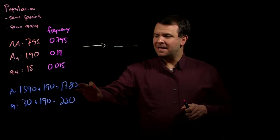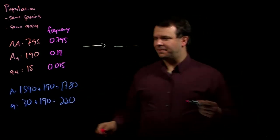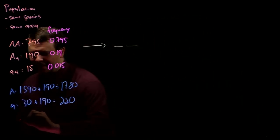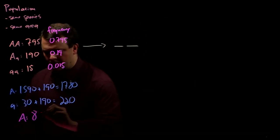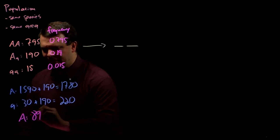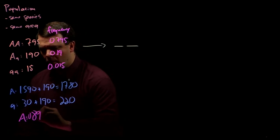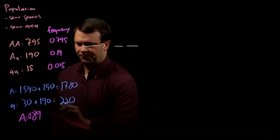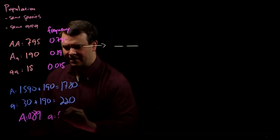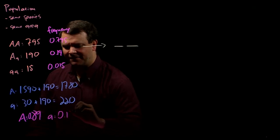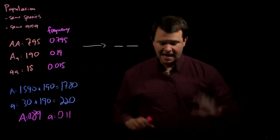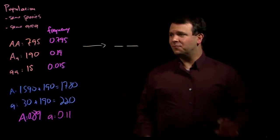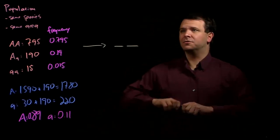We take each of these numbers, divide them by 2,000, and we find that 89% of the total alleles are big A, and that leaves 11% of the alleles as little a. And now we're ready to answer our original question.